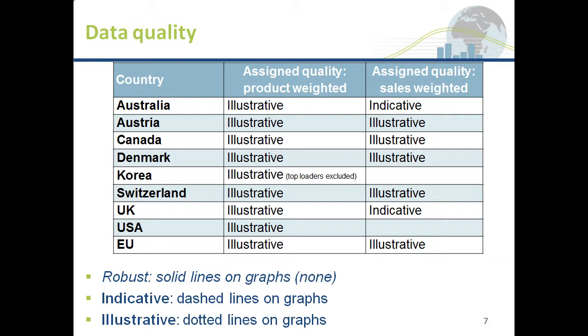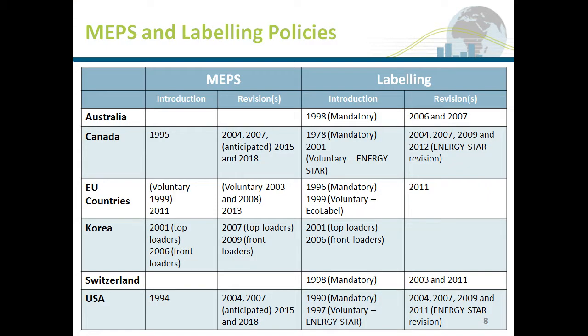Let's take a quick look at the policies in place in the different countries. Primarily there are two sets of major policy: MEPS and labelling. Everybody apart from Australia and Switzerland has MEPS in place — though recently Switzerland has been looking at that. Everybody has labelling. The EU countries have also been dealing with voluntary agreements with industry. Most countries haven't revised MEPS very often, with Canada and the US being slight exceptions. Labels are in place everywhere with revisions happening, but there are some issues with policy implementation.